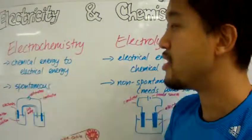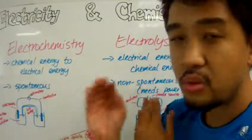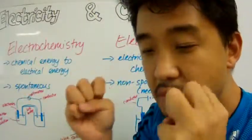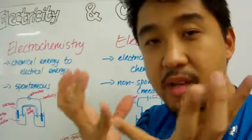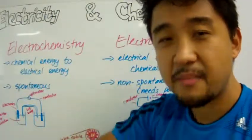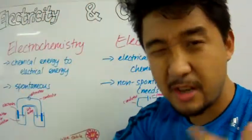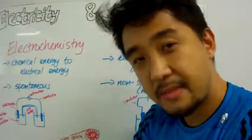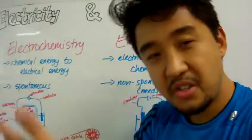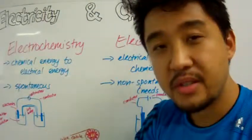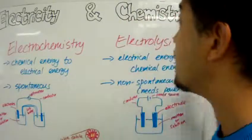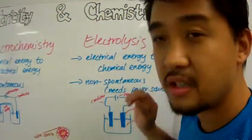Electrochemistry is a process where you convert chemical energy to electrical energy. These chemicals, when you mix them together, will spontaneously react. And when they react, electrons are being transferred from one substance to another substance. When it's transferred, we can harvest those electrons to do work.